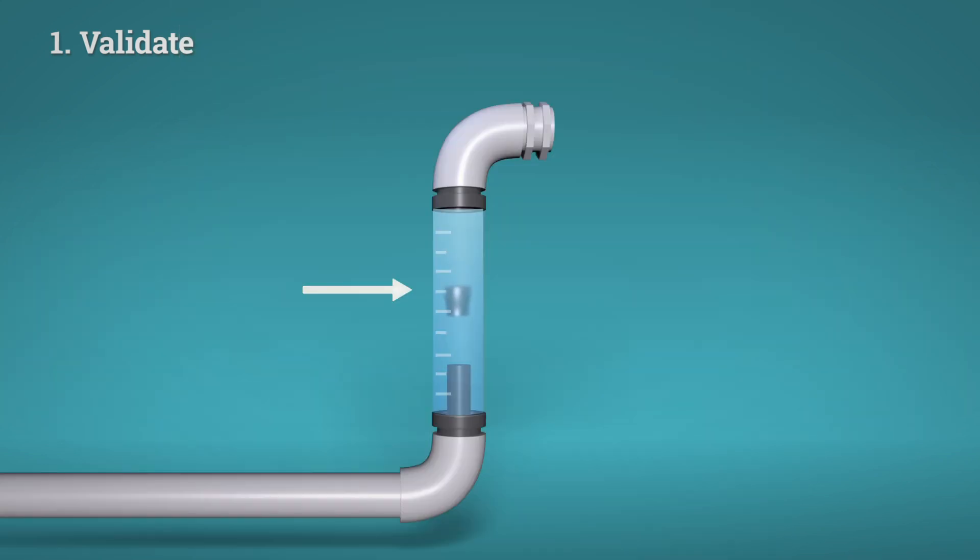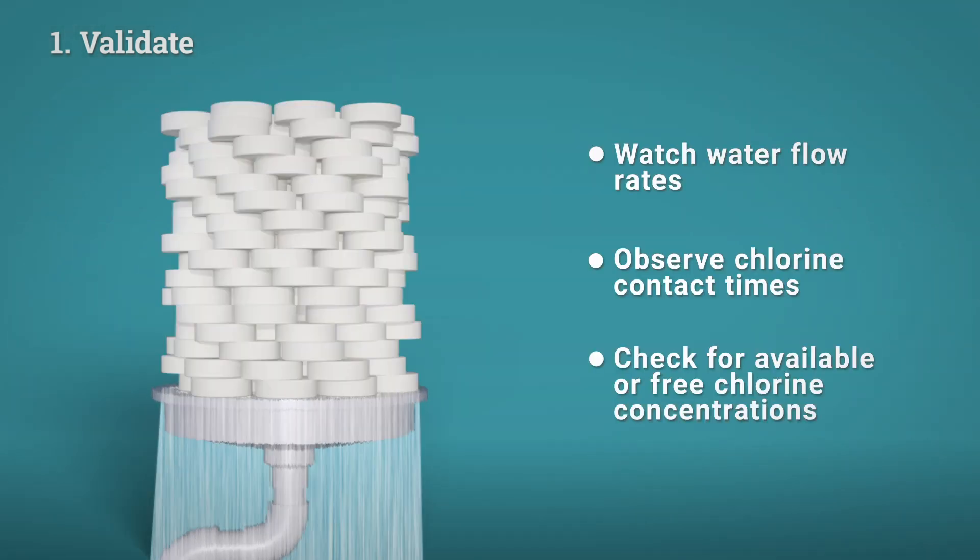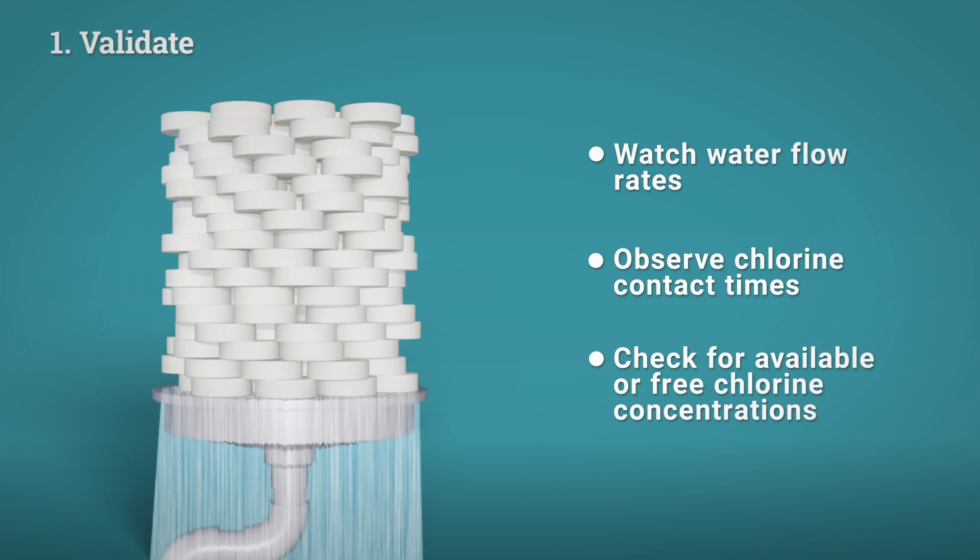When validating your chlorination system, these factors will include water flow rates, chlorine contact times, and available or free chlorine concentrations to make sure they match the parameters that have been shown to be effective in scientific studies.